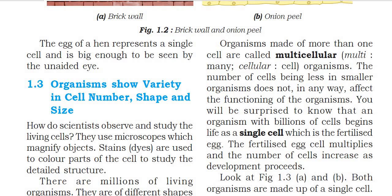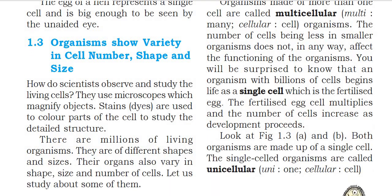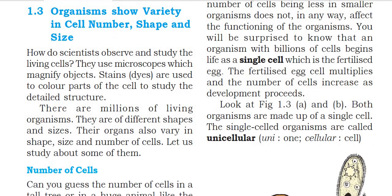You will be surprised to know that an organism with billions of cells begins life as a single cell, which is the fertilized egg. Even multicellular organisms with trillions and billions of cells — the interesting thing is that all these cells develop from a single cell. The fertilized egg cell multiplies and the number of cells increases as development proceeds.